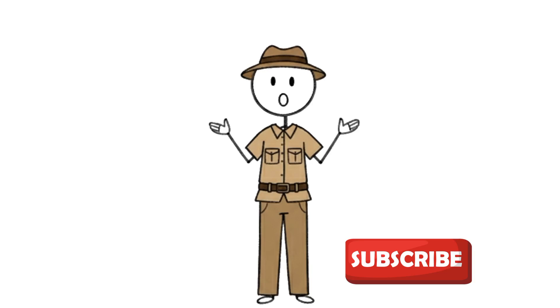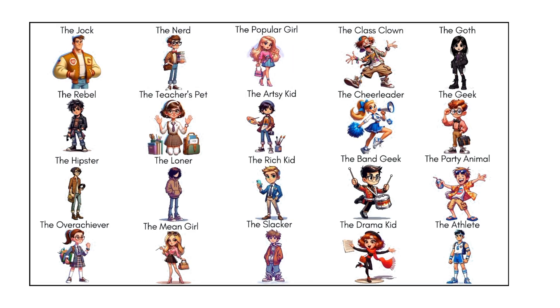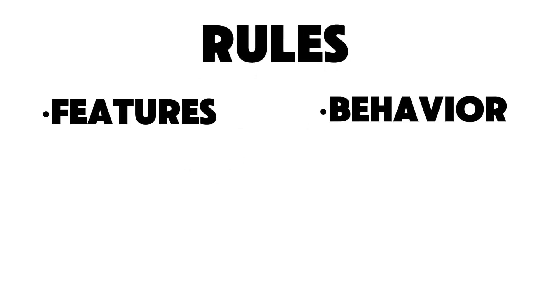Let's break down the major animal groups in the animal kingdom. If animals were in school, these would be their cliques, and each clique has rules. If an animal has certain features or behaves a certain way, it joins that group.